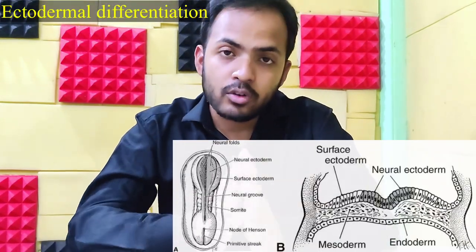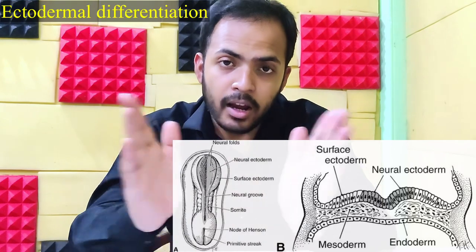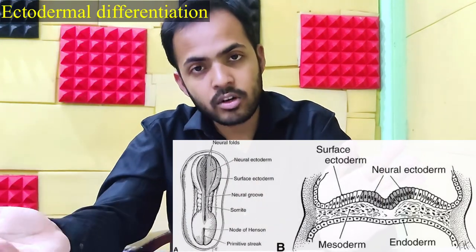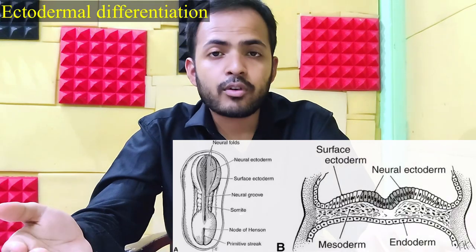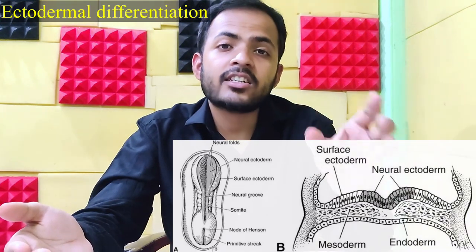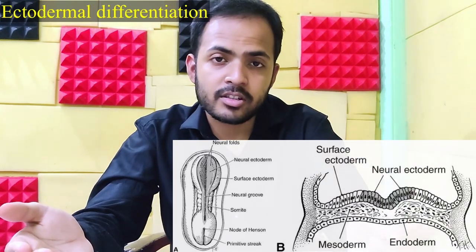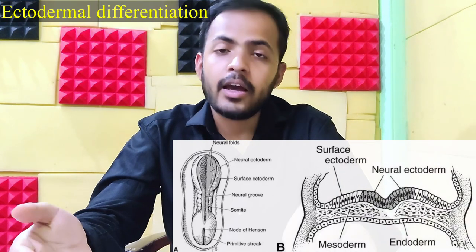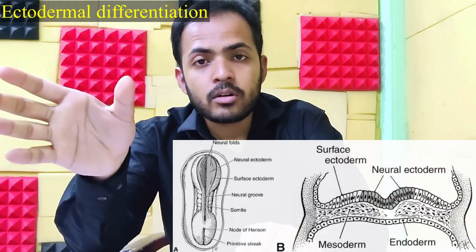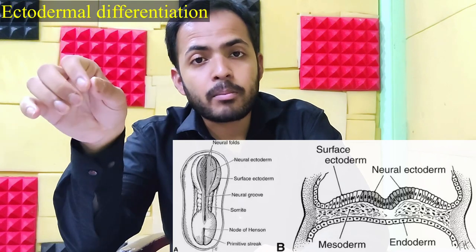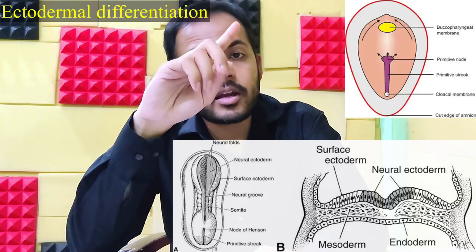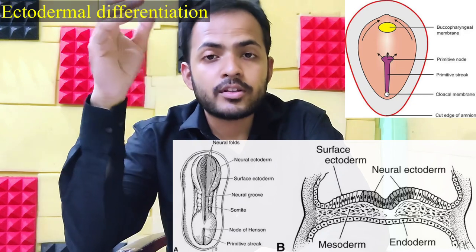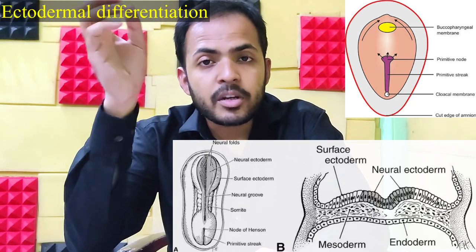As you can see in this photo, the ectoderm divides into two parts: surface ectoderm and neuroectoderm. From the neuroectoderm, the entire central nervous system and autonomic ganglia arise. From the surface ectoderm, which is already connected with the buccopharyngeal membrane and cloacal membrane — as I told you in my last video — the epidermis and related structures arise.